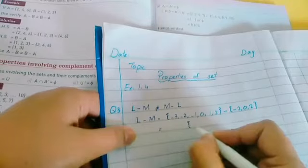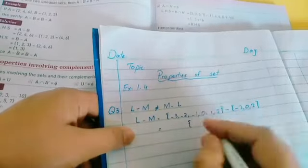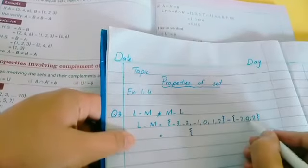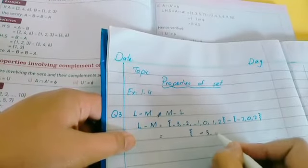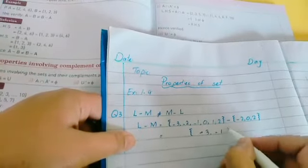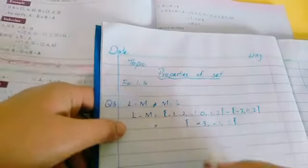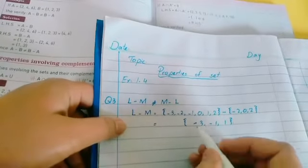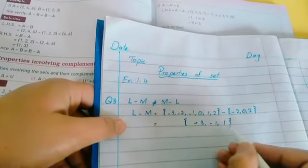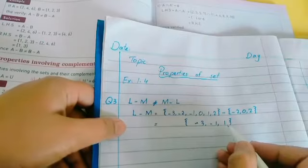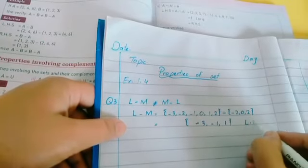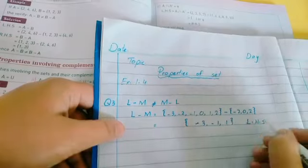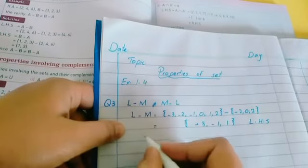Clearly you have to find the difference here, so put the equal sign there. Now see what elements are present in L set but not present in M set. These elements are minus 3 and minus 1. We also have 1 which is not present in this set. So our answer will be minus 3, minus 1, and 1. Now our left hand side is clear.